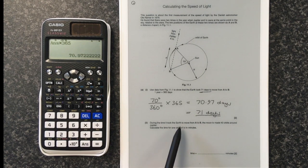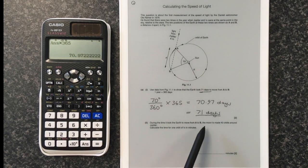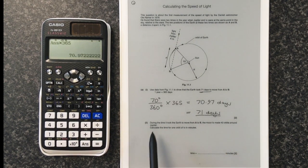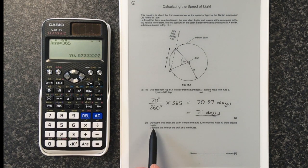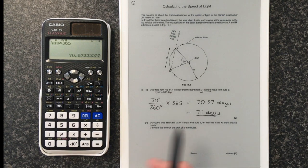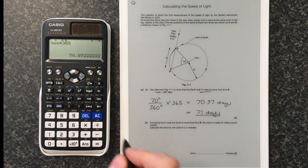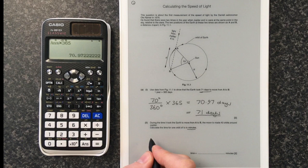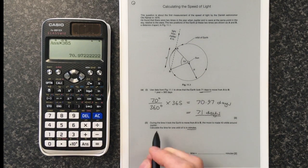During this time, to take the Earth to go from A to B, the Moon Io made 40 orbits around Jupiter. Calculate the time for one orbit. Now, in this time, it did 40 orbits. So let's work out that time in minutes. We don't want to work it out in hours or seconds or days.